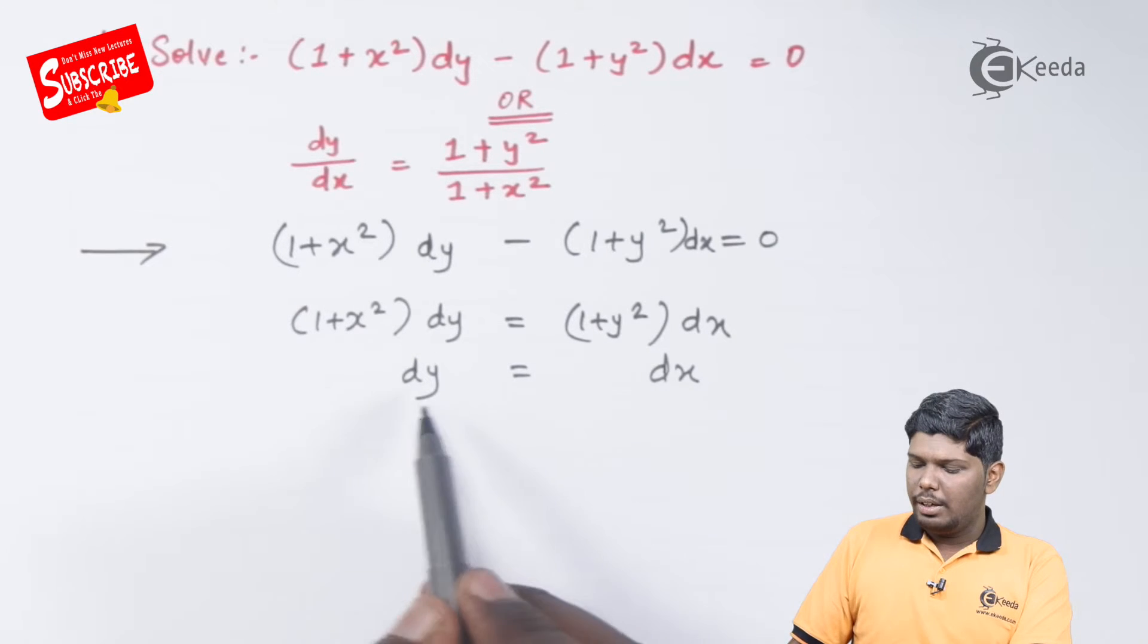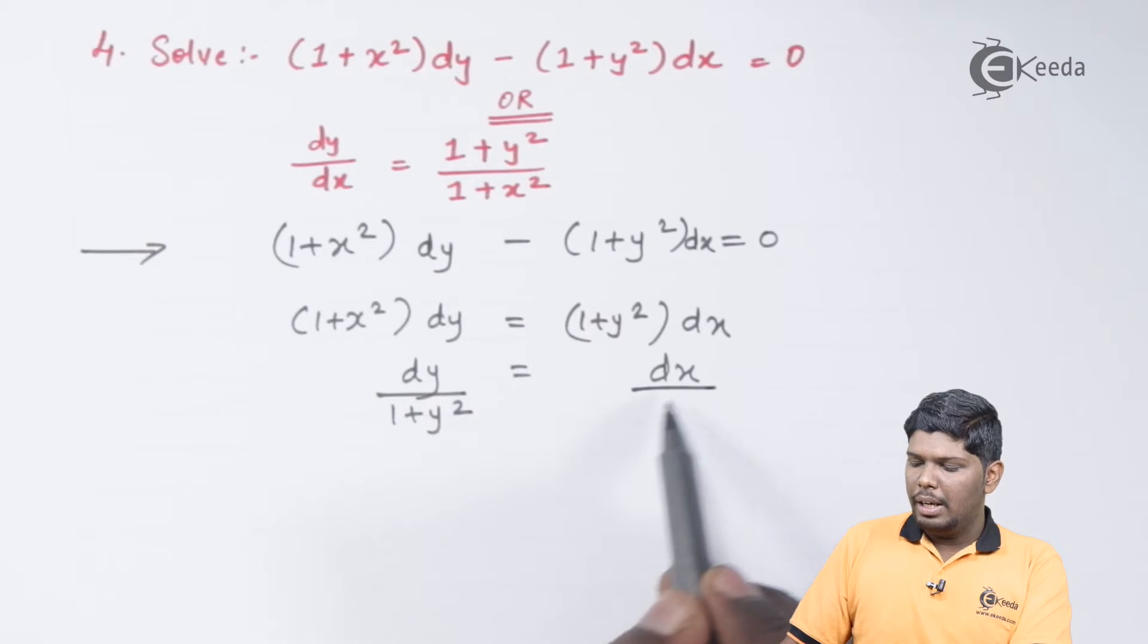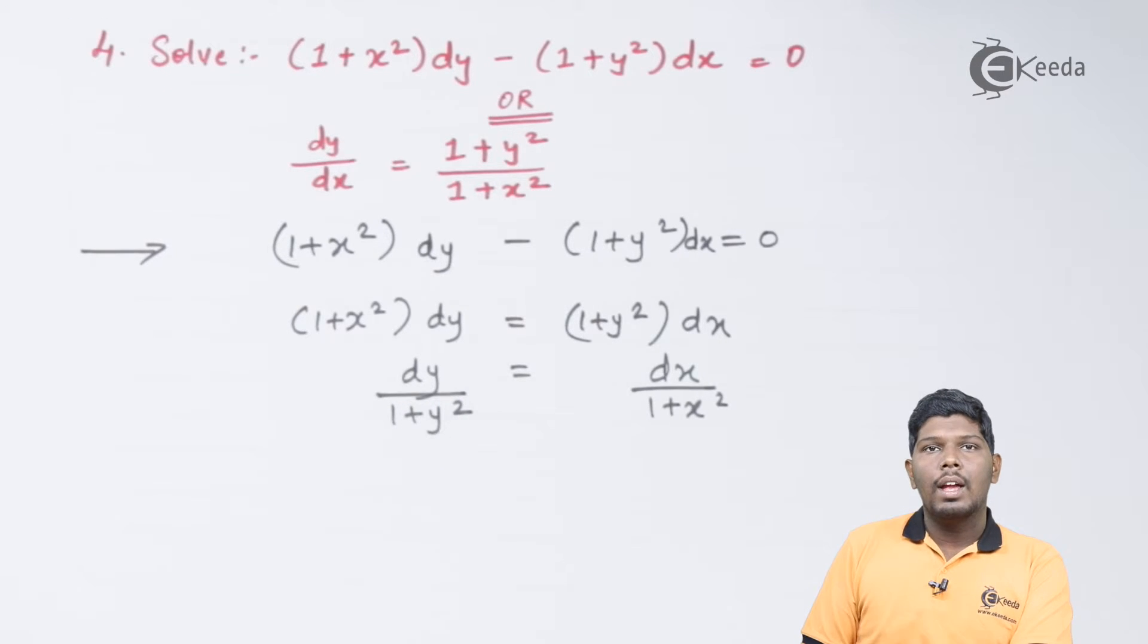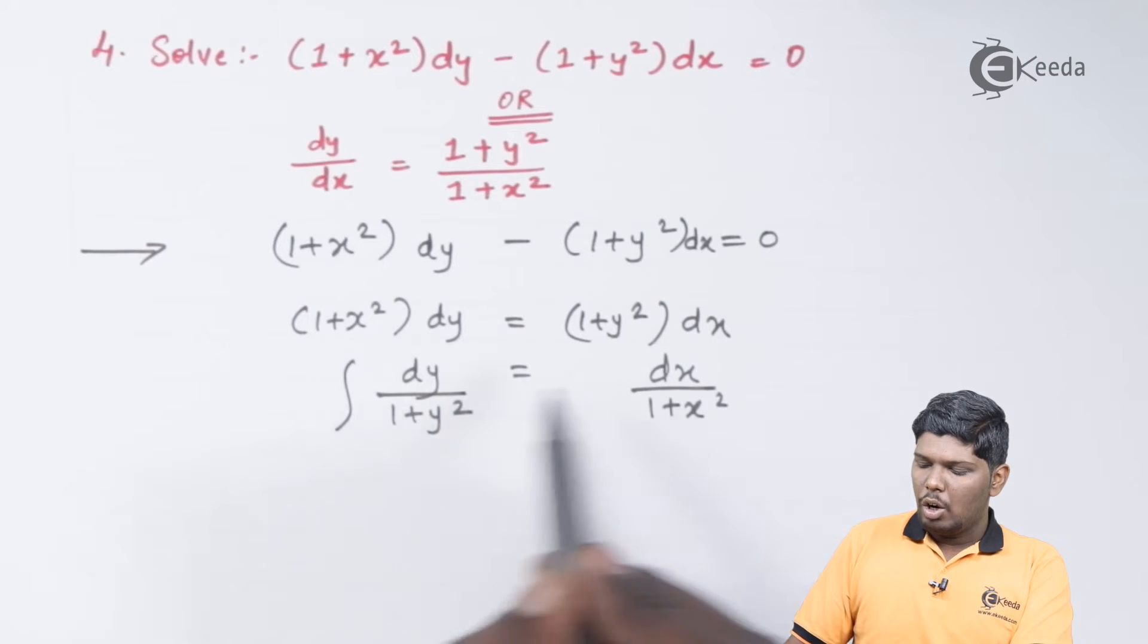So, (1 + y²) will be divided here, and (1 + x²) will be divided on the right hand side. And after that, we can integrate on both sides.